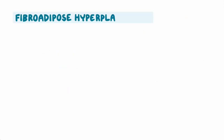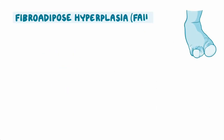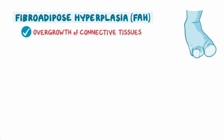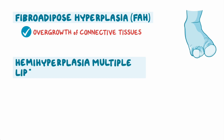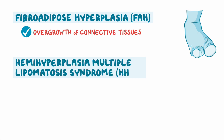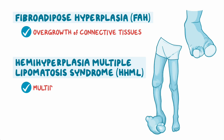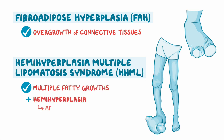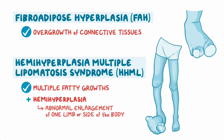Fibroadipose hyperplasia, or FAH, results from overgrowth of connective tissues. In a related disorder, hemihyperplasia multiple lipomatosis syndrome, or HHML, is characterized by multiple fatty growths, along with hemihyperplasia, which is abnormal enlargement of one limb or one side of the body.